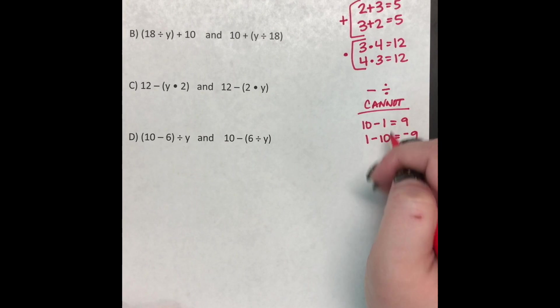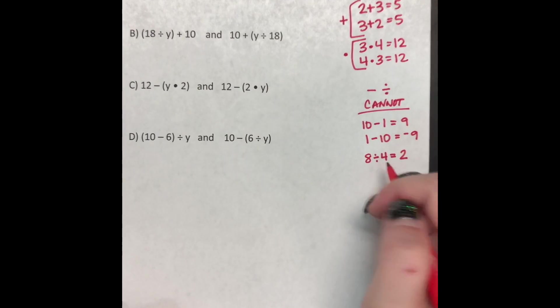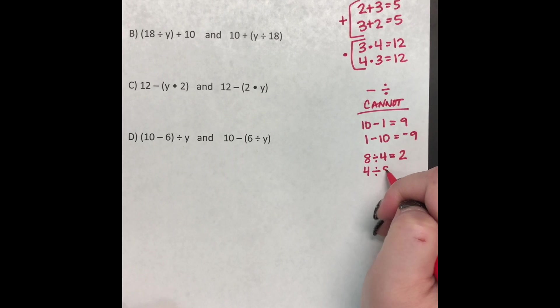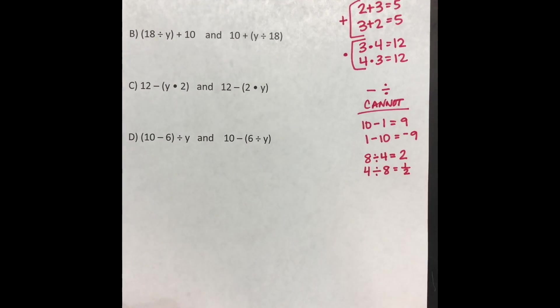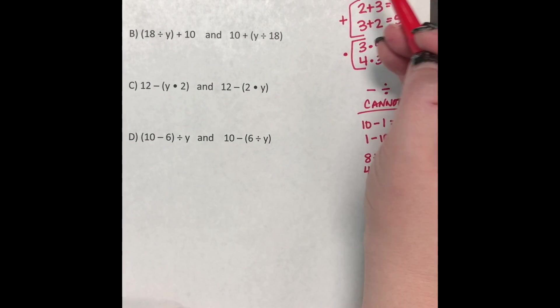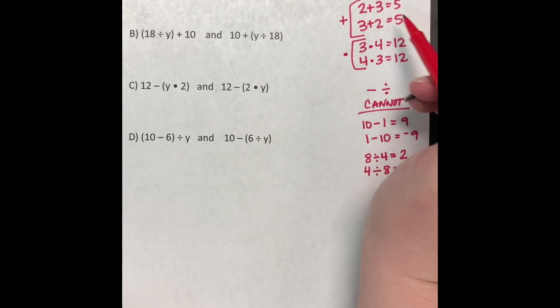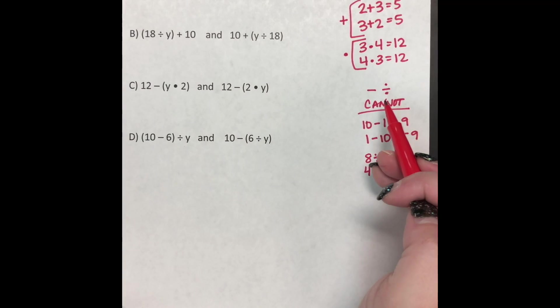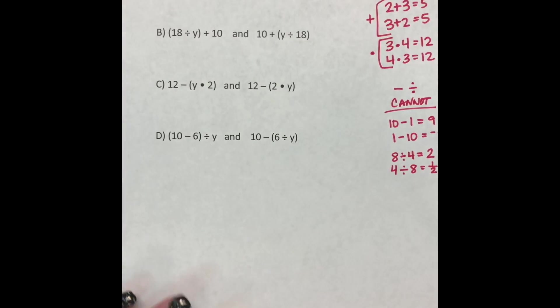Same thing for division. So let's try 8 divided by 4. Well, I know 8 divided by 4 is 2, but when I do 4 divided by 8, that's one half, right? 4 is half of 8. So again, not the same. So remember, adding and multiplying can be rearranged or reversed, but subtracting and dividing cannot. So that's important to remember as we're solving these.